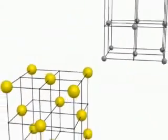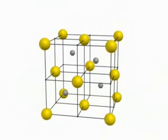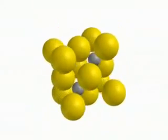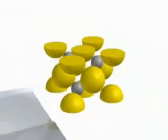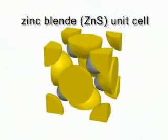Zinc sulfide adopts the zinc blende structure, as do the copper-1 halides and several other compounds. If face-centered cubic arrays of zinc ions and sulfide ions approach and interpenetrate slightly offset from each other, each ion becomes surrounded tetrahedrally by four of the other ions. Note the blinking zinc ion and the four sulfides. You can see the relative positions in this slightly expanded view of the zinc blende unit cell.